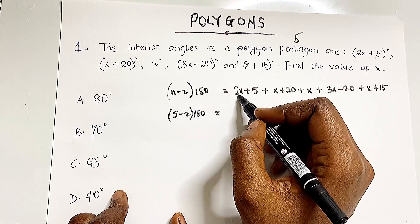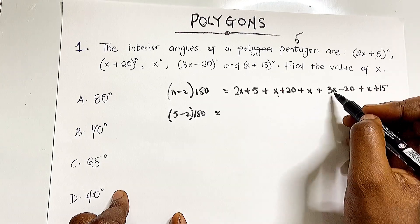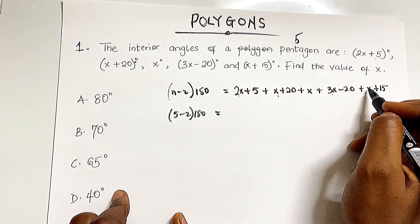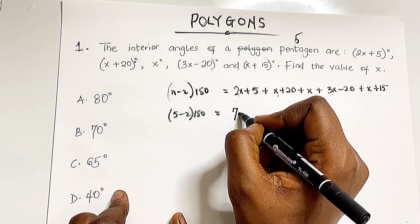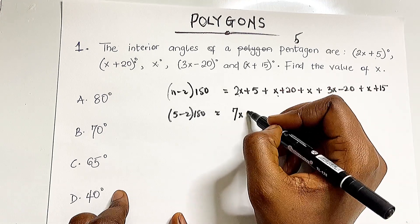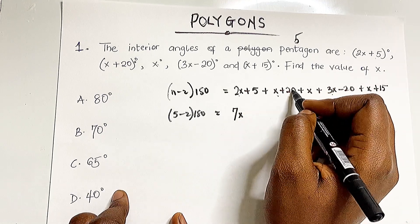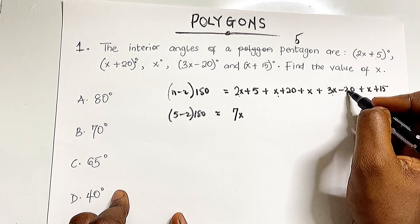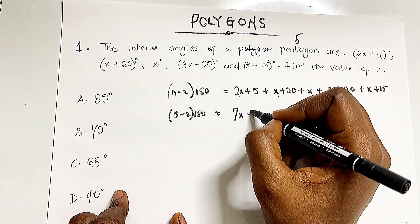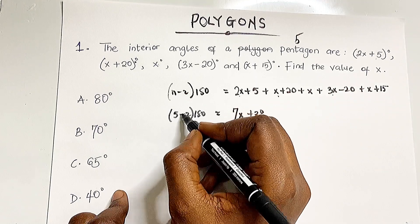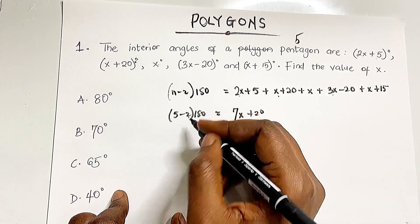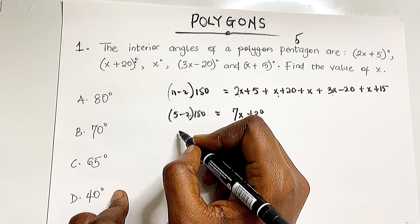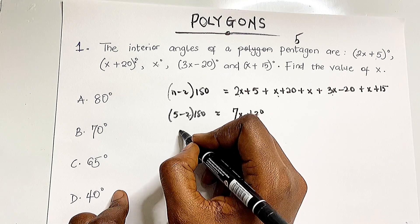This equals (5-2) × 180. Let's break this down: 2x + x + x + 3x + x. That's 8x total. Then 5 + 20 - 20 + 15 = 20. So 8x + 20 equals (5-2) × 180, which is 3 × 180 = 540.